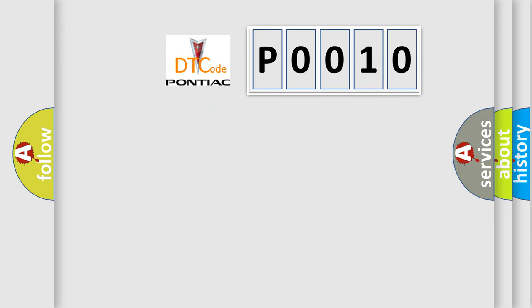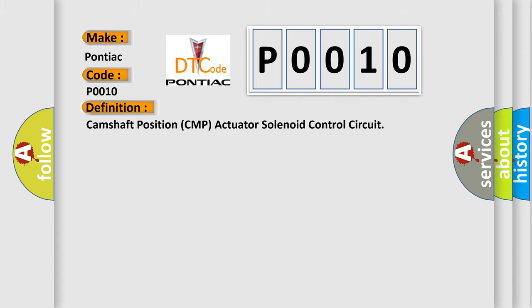So, what does the diagnostic trouble code P0010 interpret specifically for Pontiac car manufacturers? The basic definition is: Camshaft position CMP actuator solenoid control circuit. And now this is a short description of this DTC code.